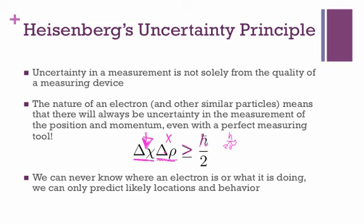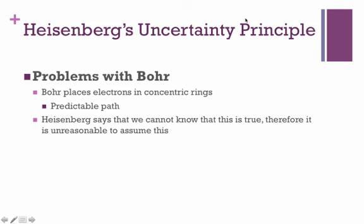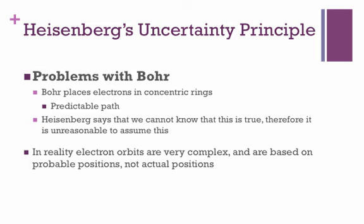In short, we can never know exactly where an electron is or what it's specifically doing. We can only predict likely locations and likely behavior — we are fundamentally limited in what we can know about electrons. Translating this back to the Bohr model: Bohr places electrons in very predictable concentric rings, much like planetary orbits where we can predict exact locations. Heisenberg says that doesn't work for electrons — we cannot know that an electron is traveling on a specific ring, so it's unreasonable to make that assumption. In reality, electron orbits are extremely complicated; it's more about predicting probable paths than actual positions.